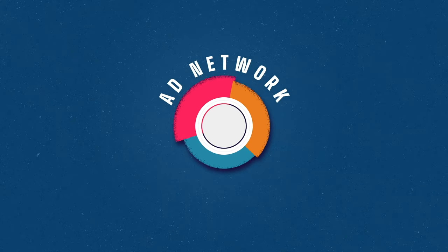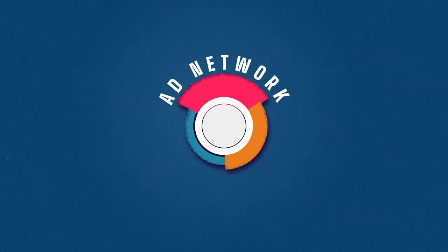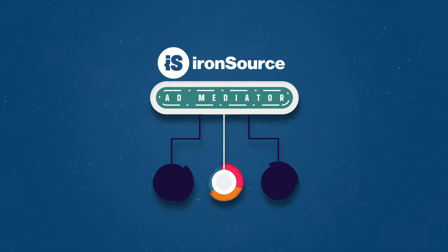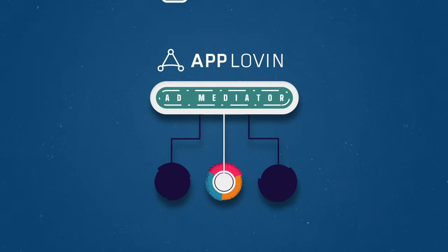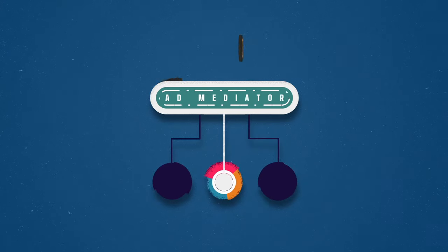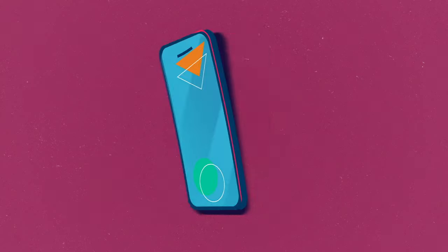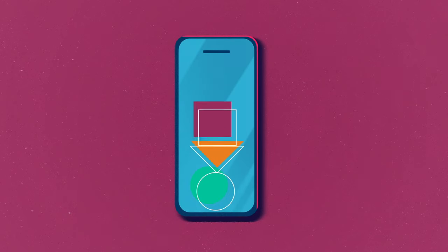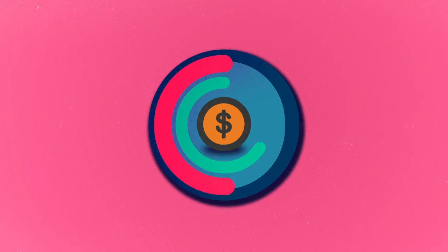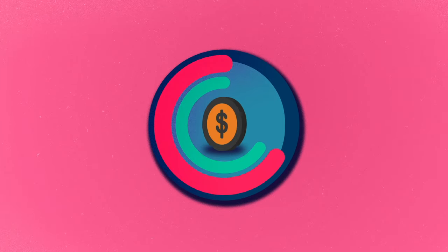Deciding which ad network to use or which ad mediation platform to go with, how to optimize your ad placements in the game, how to improve your app store optimization, how to acquire users — and a lot of other variables — are all non-trivial things to consider. So how, as an indie developer, can you ensure that you have all the best practices in place?